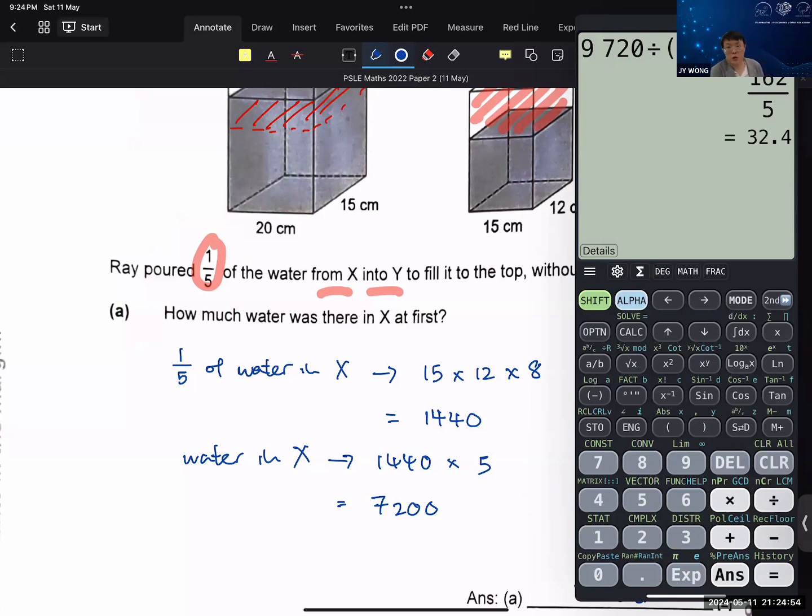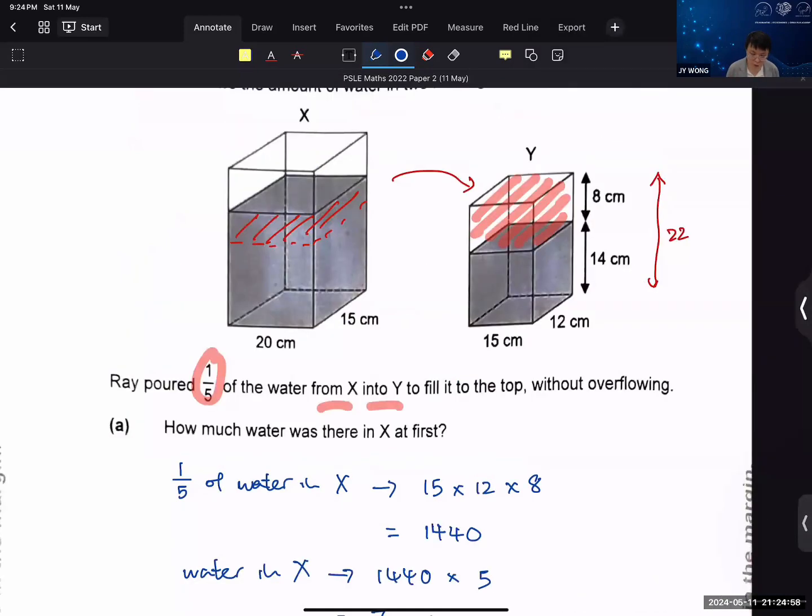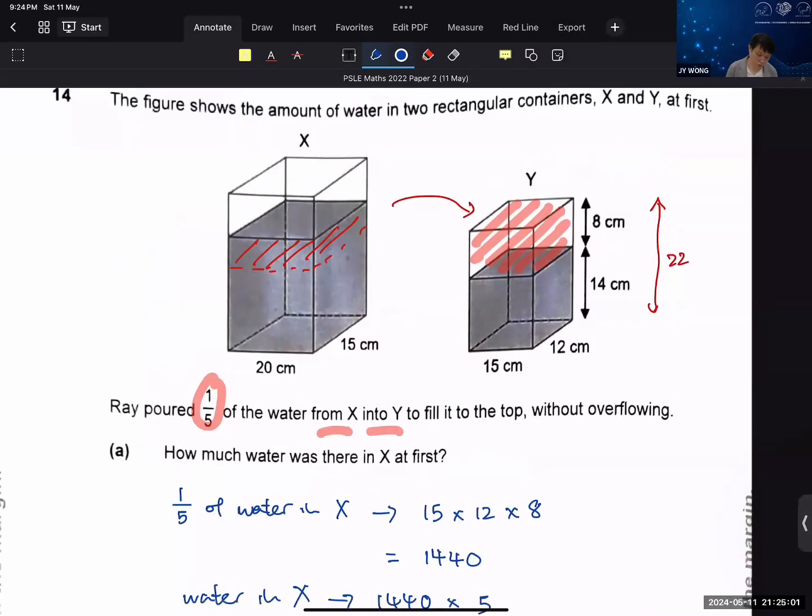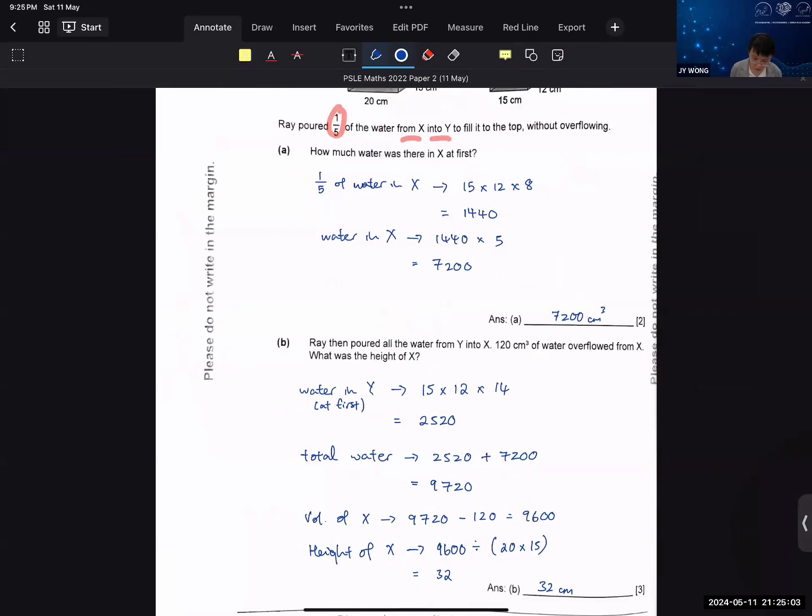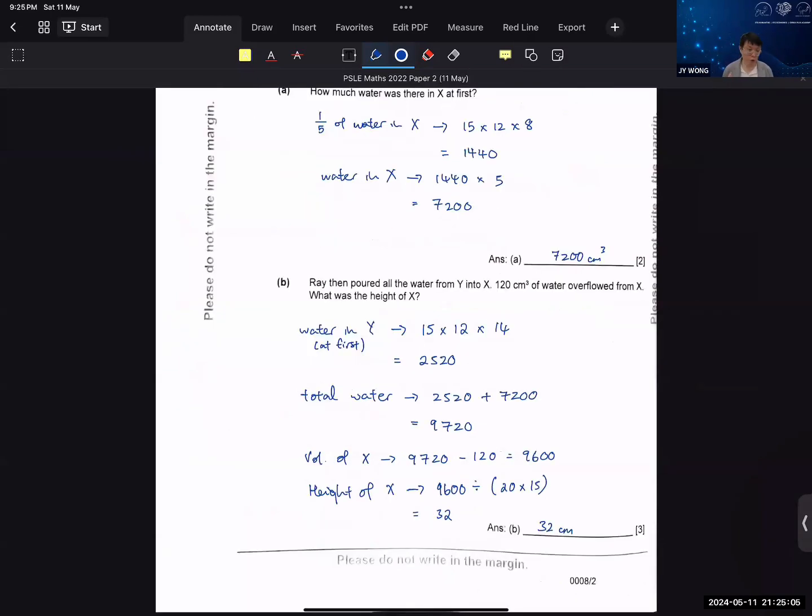You forget to minus the 120. But if the water overflow, then the amount of water left in B, left in X, sorry, is 9600. So cannot make the careless mistake. For forgetting the minus 120, you lose two marks.